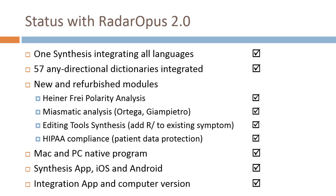All of these features are available on Mac and PC. The first RADAR OPUS app — the Synthesis app — is now available on both the Apple and Android platforms and they are integrated, meaning from the field you can send your information from the app to your computer version and maintain it there.